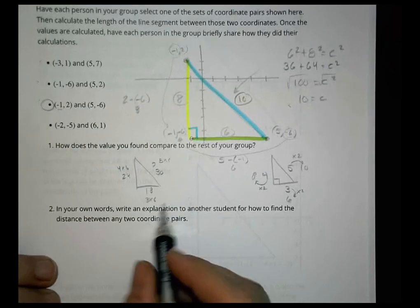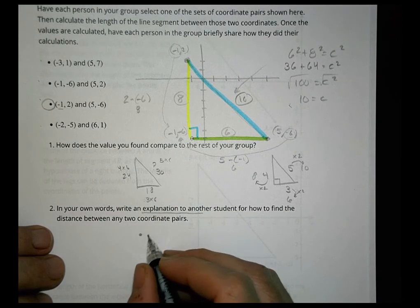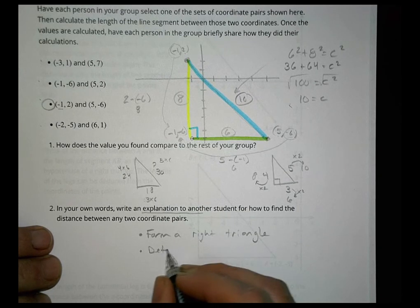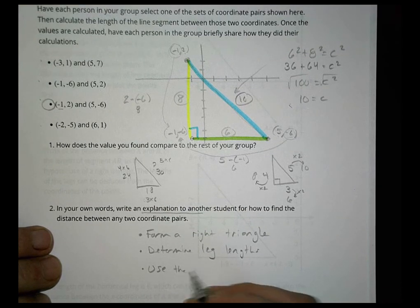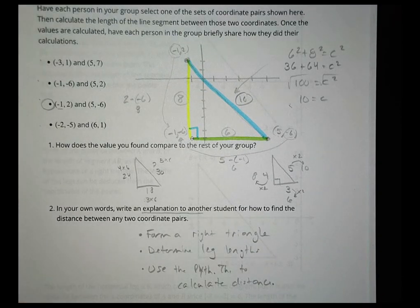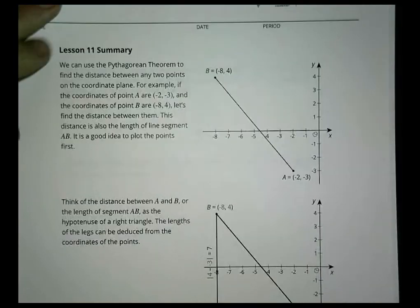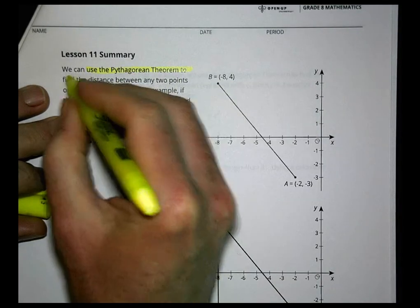In your own words, explain how to find the distance between two coordinate pairs. Step one: form a right triangle. Step two: determine the leg lengths — find how long each leg is. Step three: use the Pythagorean theorem to calculate the distance. That's exactly what we did — form the right triangle, find the leg lengths, then apply Pythagorean theorem to find the missing hypotenuse.